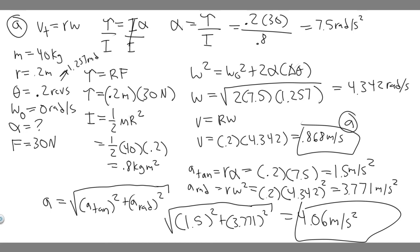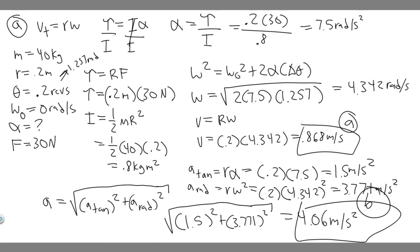So 4.06 meters per second squared is the magnitude of the resultant acceleration — the answer to Part B. Those are your two answers, and hopefully you found this useful.